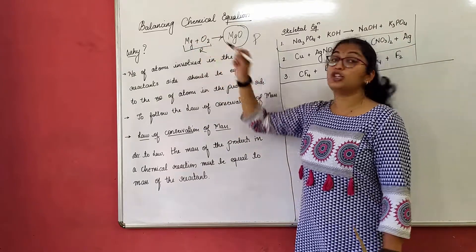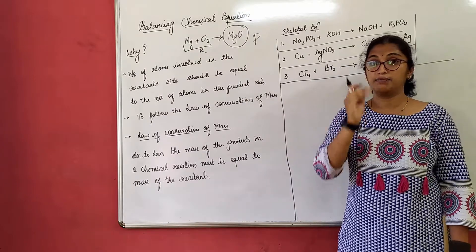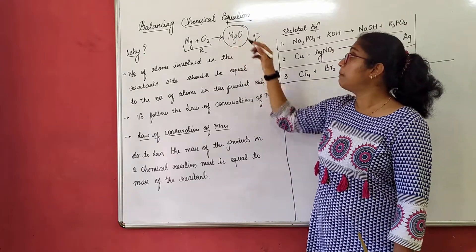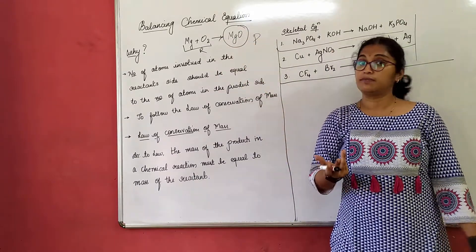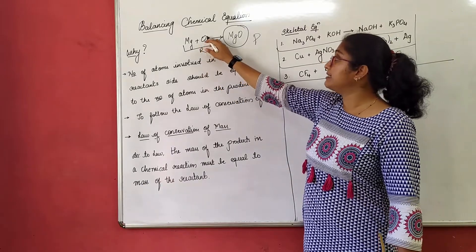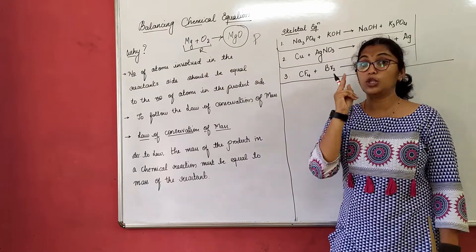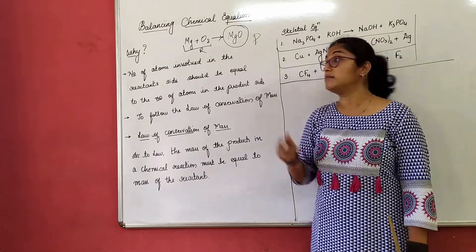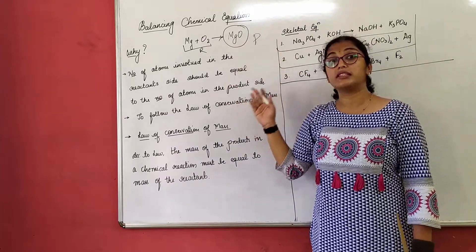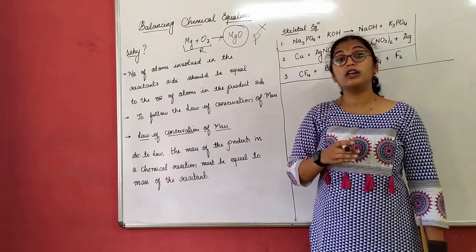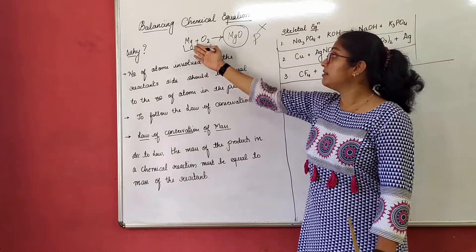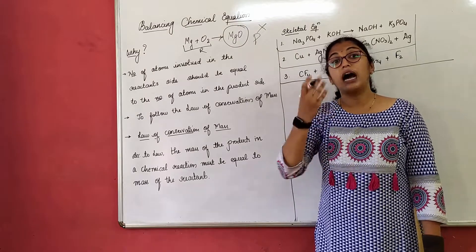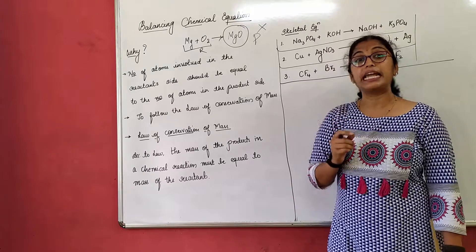Magnesium has how many atoms here? One atom. In the reactant, magnesium has only one atom. In the product, magnesium also has one atom. In the reactant side, oxygen has how many atoms? Two atoms. And in the product side, oxygen has how many atoms? Only one atom. So this is not balanced — this is not a balanced equation. This type of equation is called a skeletal equation. Unbalanced equations are called skeletal equations.